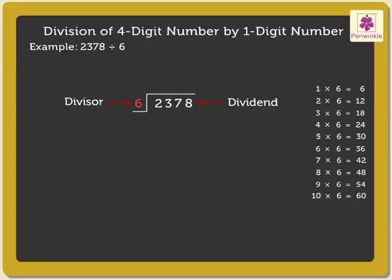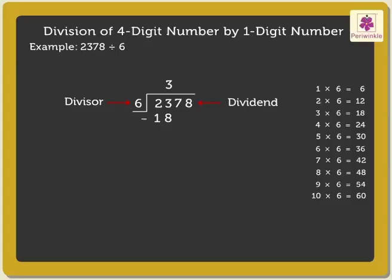The divisor is 6 and the nearest product is 18. Hence, we write 3 above 3. As we know, 6 into 3 is equal to 18, which is nearest to 23. We write the number 18 under 23. Now, subtract 18 from 23, which is equal to 5.